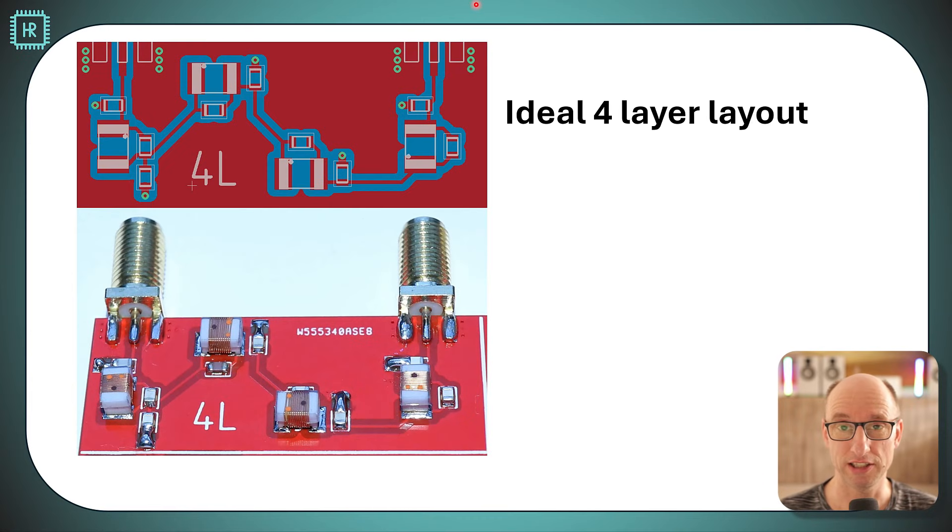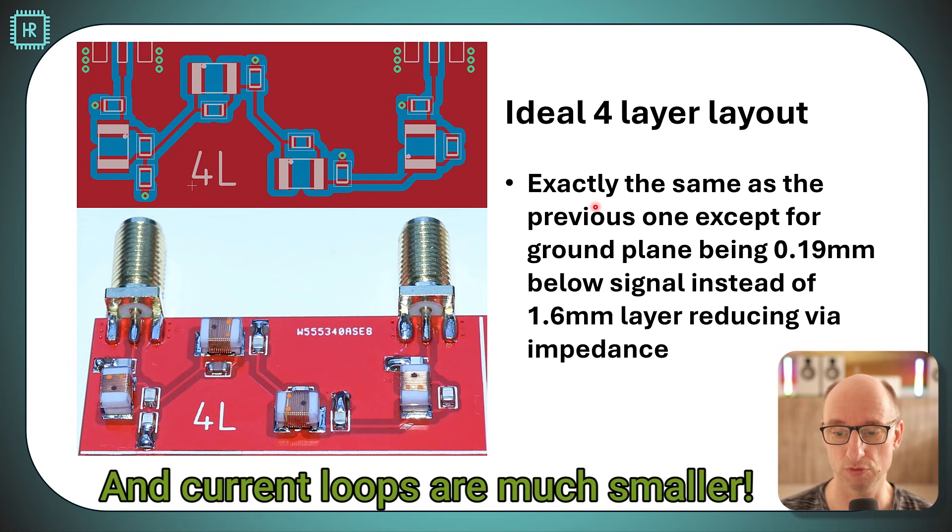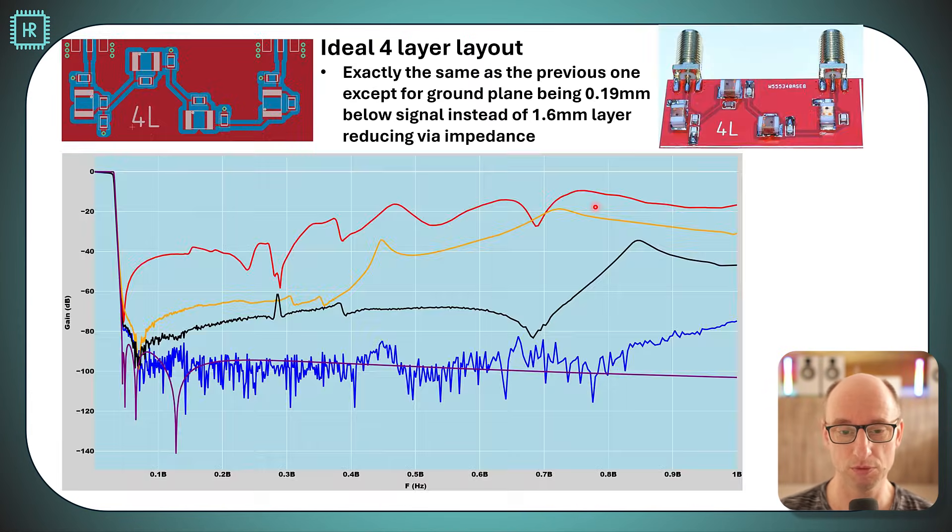Let's go to the final layout where we use all three important rules. So what's different? If you look at this picture it looks exactly the same. The only difference is this is a four layer and the ground plane is not 1.6 millimeters away but just 0.19 millimeters away. So that yields a huge improvement in the impedance for the vias.